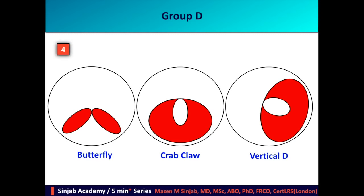The last group is Group D, which consists of special shapes such as butterfly, crab claw, vertical D, irregular pattern, or clone face. In all these cases, they are considered abnormal and classified as high risk.